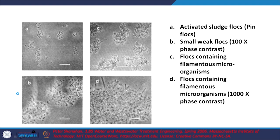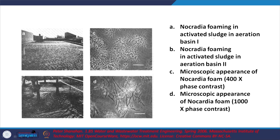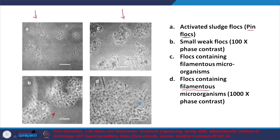Pin flocs occur when we have high F/M, leading to small weak flocs. Flocs containing filamentous microorganisms — at the right mix of floc-forming and filamentous microorganisms — show a relevant backbone and bigger flocs. Nocardia foaming in the activated sludge basin is visible in these images; the microscopic appearance of Nocardia foaming shows why these do not settle down well.